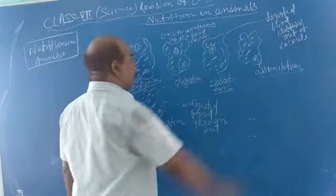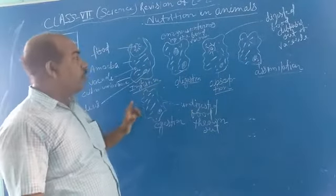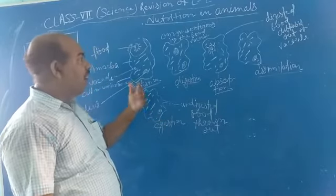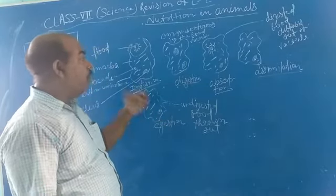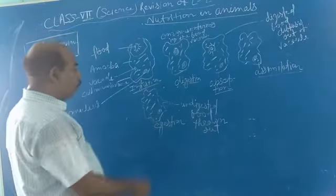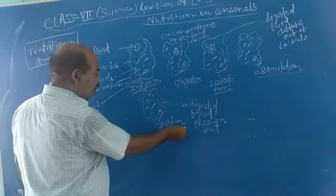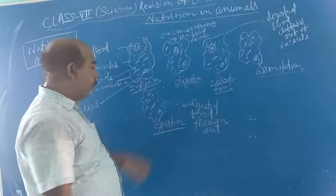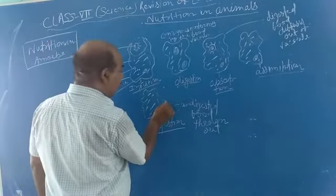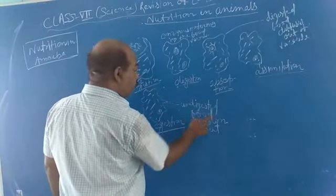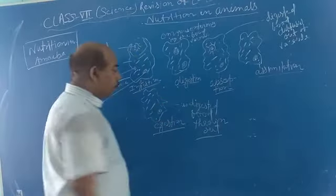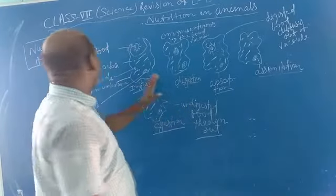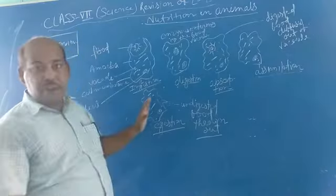The waste products include carbon dioxide and other substances. This is called egestion - throwing out all the waste products from the body. One part is egestion, throwing waste out of the body. This is the process called egestion.